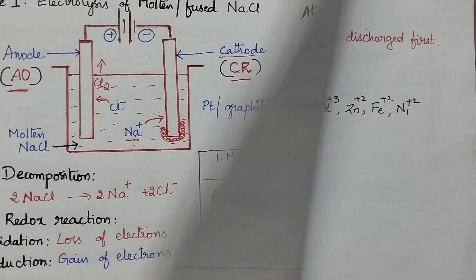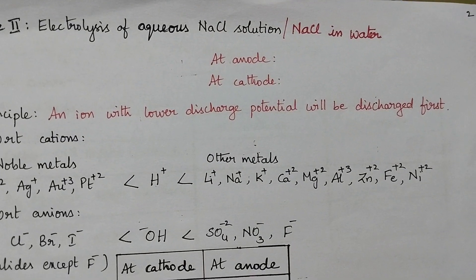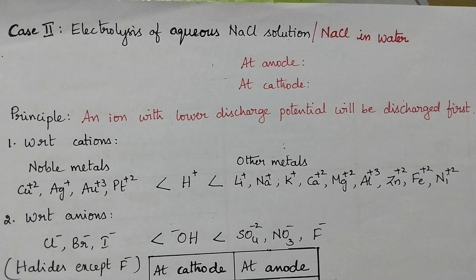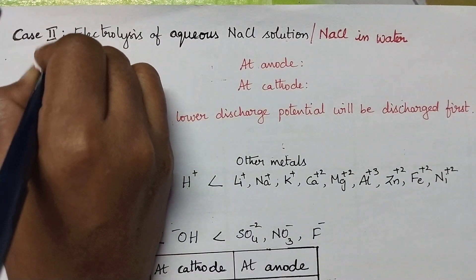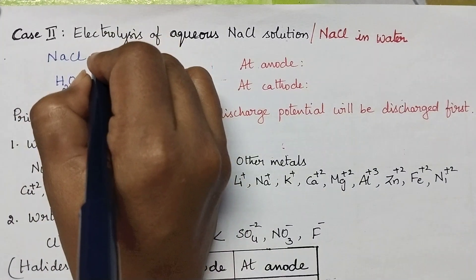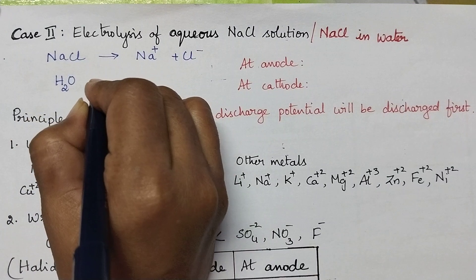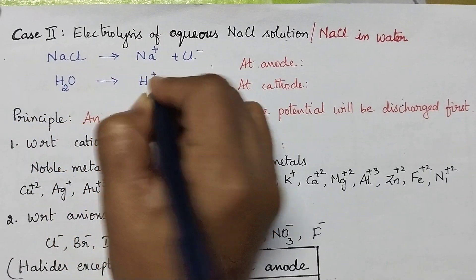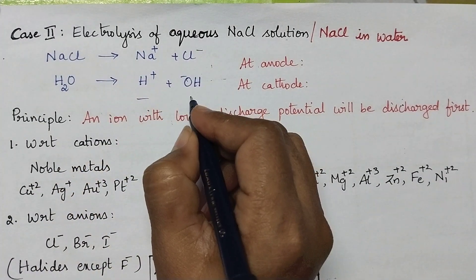Now let us discuss about the electrolysis of an aqueous electrolytic solution. Here let us consider the electrolysis of aqueous NaCl solution. Aqueous NaCl solution means NaCl is present in water, so along with NaCl, water will also be present. During electrolysis, NaCl dissociates into Na⁺ and Cl⁻. Similarly water dissociates into H⁺ and OH⁻ ions. So in this electrolytic solution, two cations and two anions will be present.